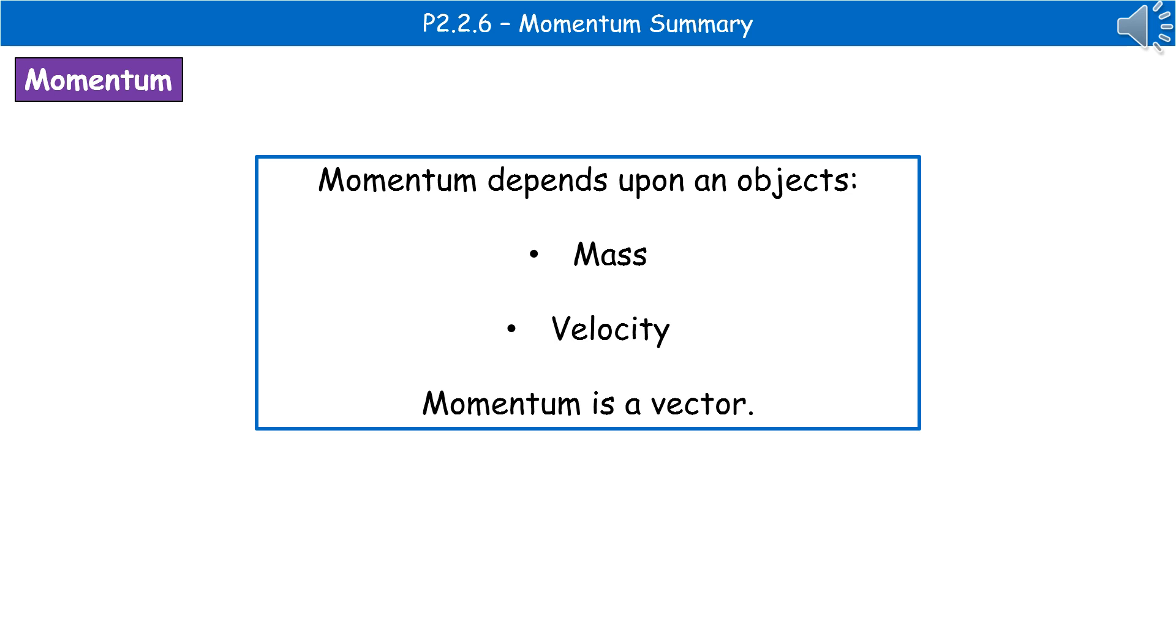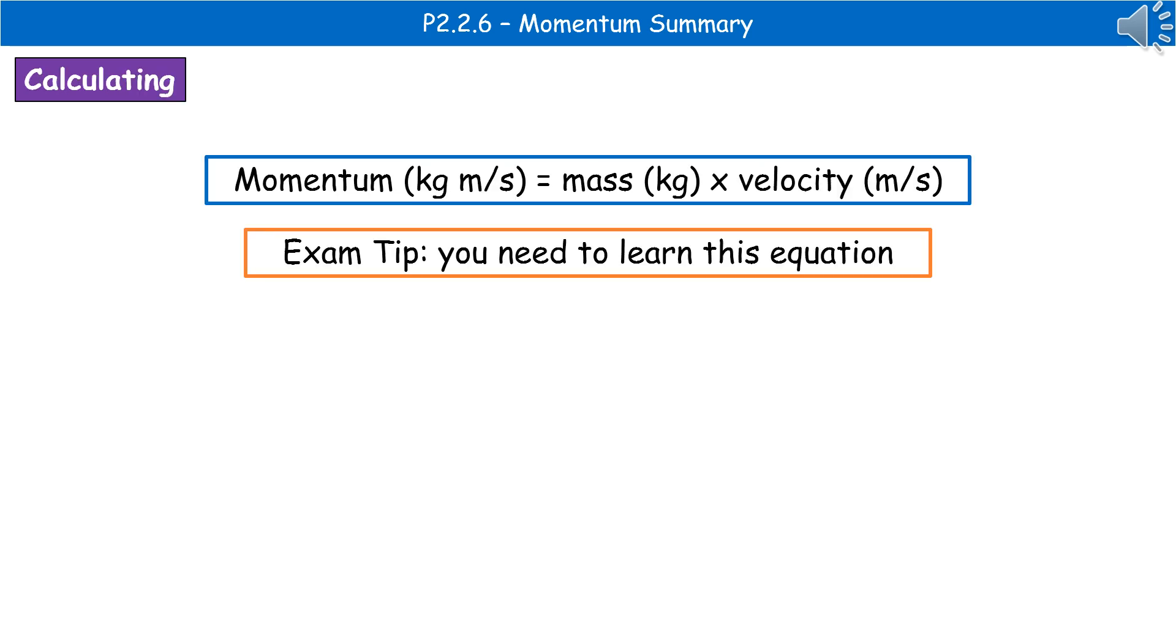Welcome to our review on momentum. When we're talking about momentum, we're referring to a vector. Momentum will depend upon two things: the mass of the object and the velocity of the object. The next thing we need to know is the actual formula for calculating momentum. So momentum is the mass times velocity.